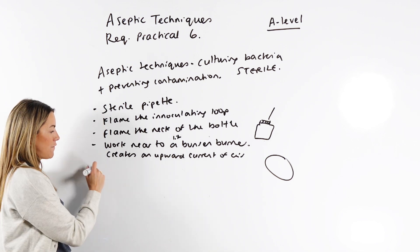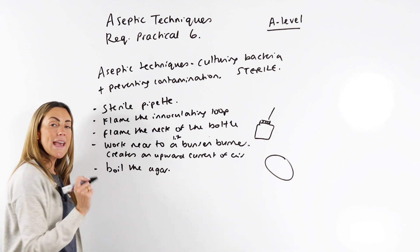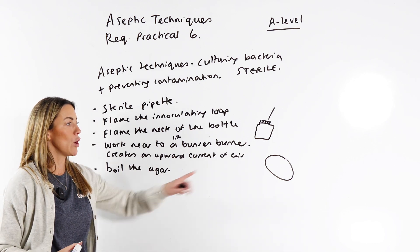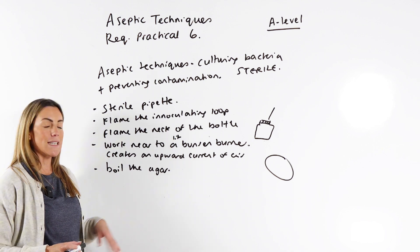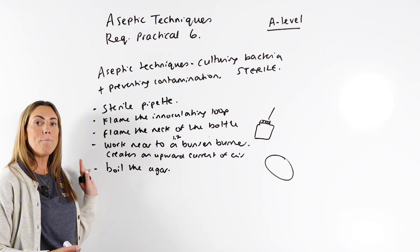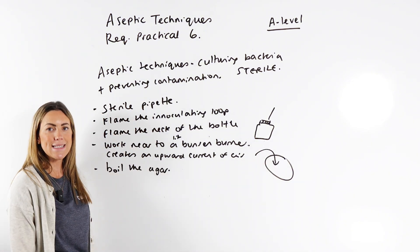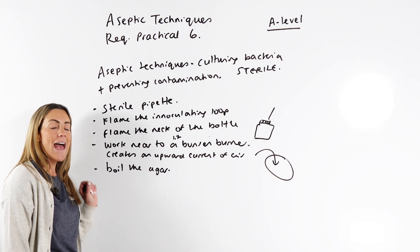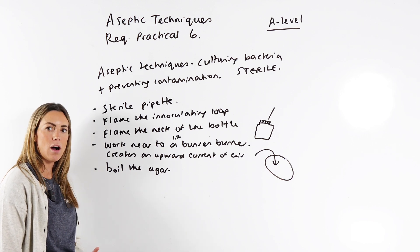We've got four so far. Boil the agar. Now, agar is a nutrient medium that we put into our petri dish to grow our bacterial culture on. It contains all of the nutrients that bacteria need to divide, but we do boil it before we pour it into our petri dish to kill any microorganisms that might be contaminating that agar.